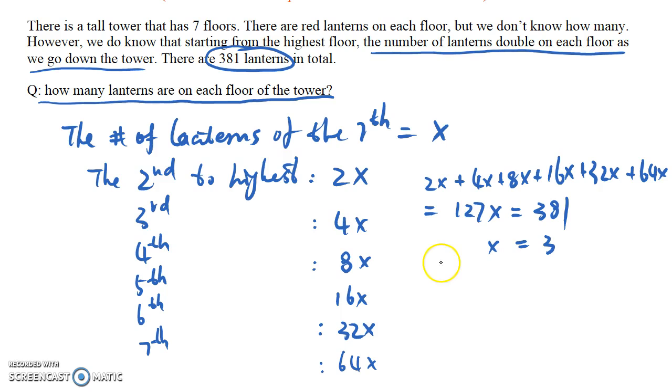And we have arrived at the answers. Therefore, from the seventh to the first floor, the number of lanterns are: